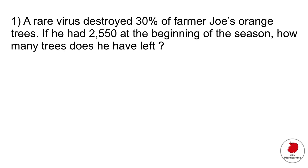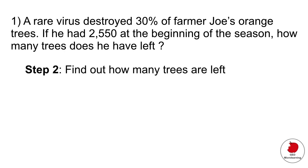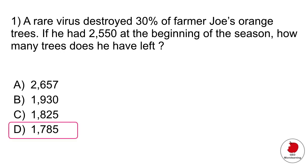Step two: find out how many trees are left. Simply subtract the lost trees from the original number, and that gives you 1,785, which is option D.